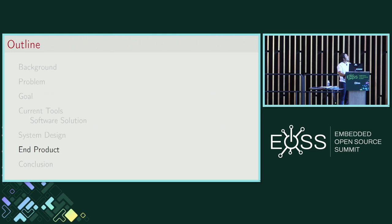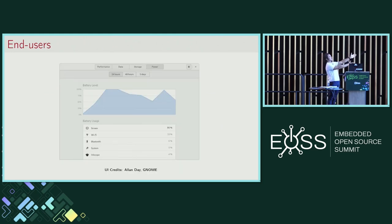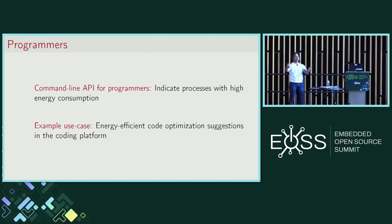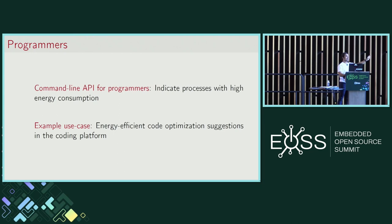What is the product? For our end users, I want them to have useful data that enables them to do something in their real life — we can report data for a device or a particular application. For programmers, the end goal is to have a command line API that indicates the energy value for a process. One really nice use case: let's say you're programming in your favorite IDE and you write a triple nested for loop, and immediately your IDE says, oh man, this is going to take a lot of energy — maybe consider rewriting it. I want to have energy-efficient code optimization suggestions live in the platform.